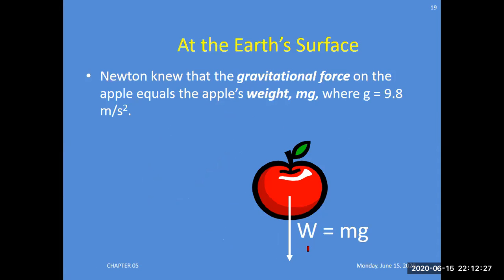At Earth's surface, if you allow an apple to fall, it falls down due to its weight, which is mass multiplied by acceleration due to gravity, mg. Newton knew that the gravitational force on the apple equals the apple's weight, mg, where g's value is 9.8 meters per second squared. By using this value and putting in the mass, you can calculate the weight of any object falling under the influence of Earth.